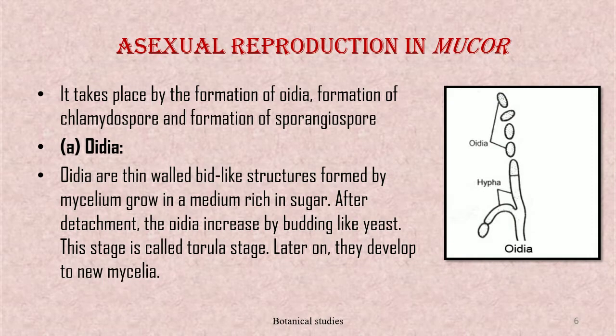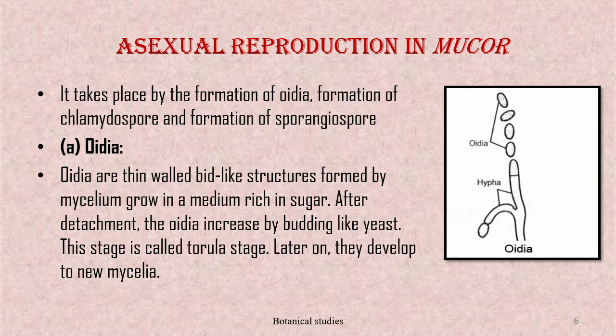Asexual reproduction in Mucor occurs by the formation of oidia. Oidia are thin-walled bead-like structures formed by mycelium grown in a medium rich in sugar. After detachment, the oidia increase by budding like yeast; this stage is called the torula stage. Later on, they develop into new mycelium.